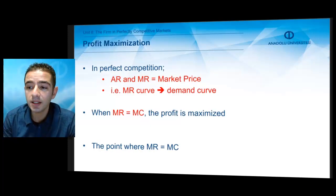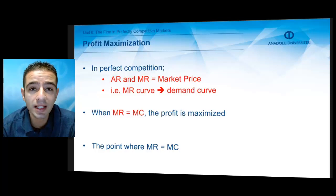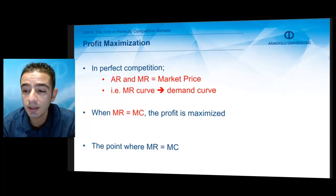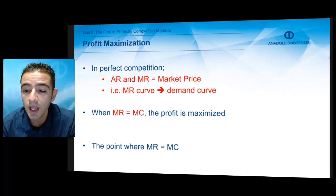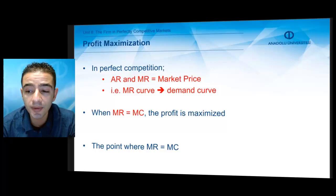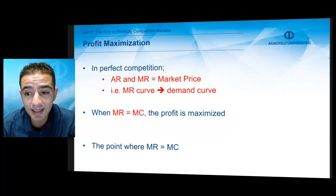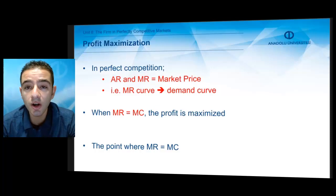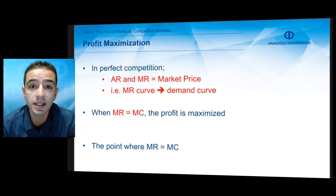Profit maximization in perfect competition can be conceptualized as follows. In perfect competition, a firm's average revenue and marginal revenue equal the market price — the marginal revenue curve is also the representative firm's demand curve. When marginal revenue equals marginal cost, profit is maximized. The profit maximization condition is MR = MC = P, and thus a competitive firm produces output up to the point where MR equals MC.